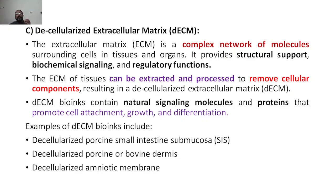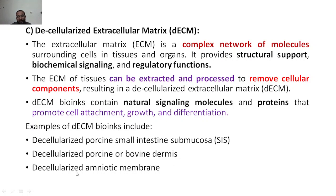The dECM bioink acts as an extracellular matrix with natural signaling molecules — similar to how signals work in muscle contraction, touch, or movement. Because of these two properties — natural signaling molecules and proteins — dECM promotes cell attachment, growth, and differentiation so that organs can be produced effectively. Examples include SIS (decellularized porcine small intestine submucosa), decellularized porcine or bovine dermis, and decellularized amniotic membrane.